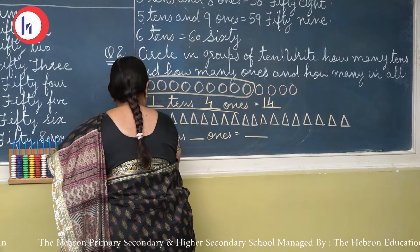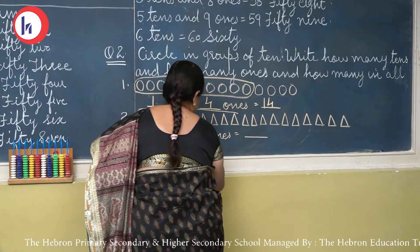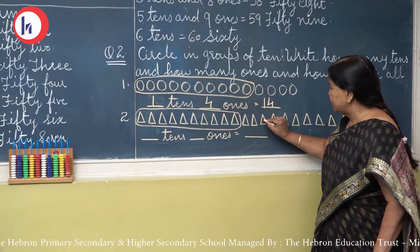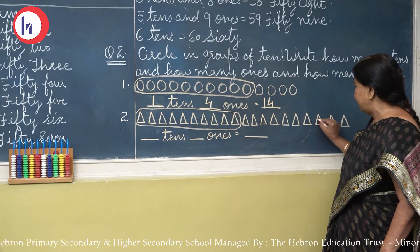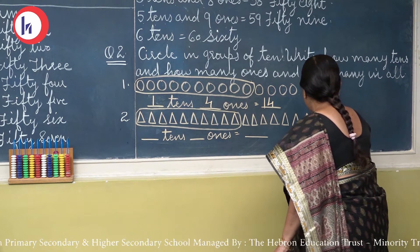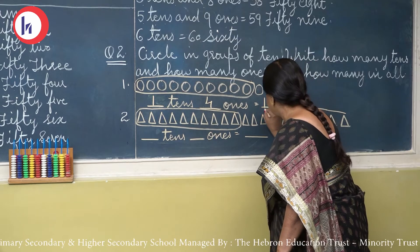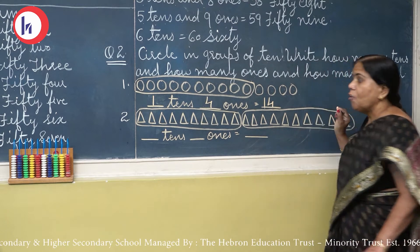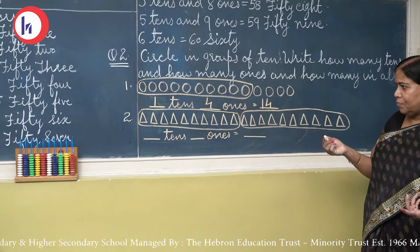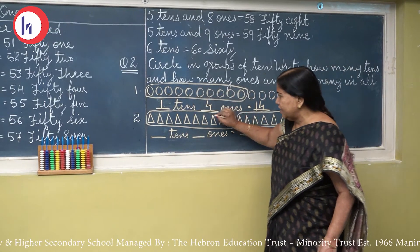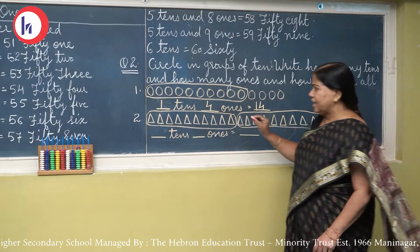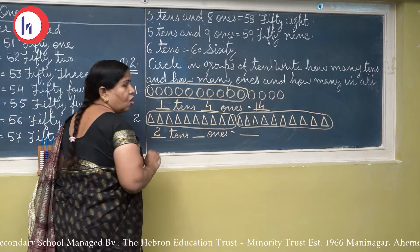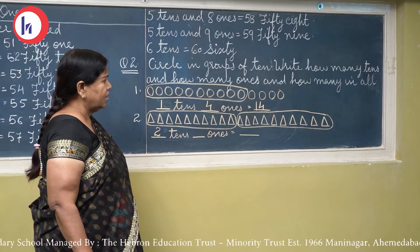Now children, next question — listen carefully. Circle in groups of 10, write how many 10s and how many ones. Now let's see the first part: circle in groups of 10. So you have to circle the group of 10. I will take 10: circle — 1, 2, 3, 4, 5, 6, 7, 8, 9, 10. A circle. Now how many 10s are there? Yes, 1 ten.